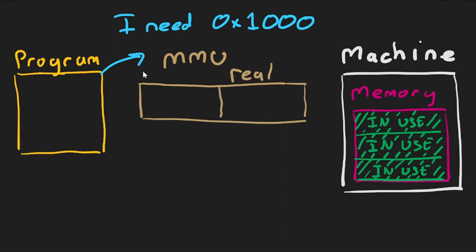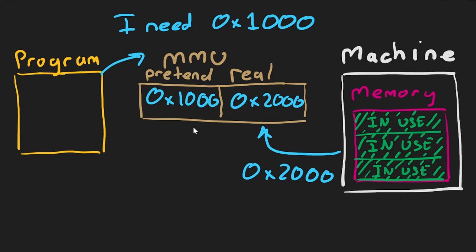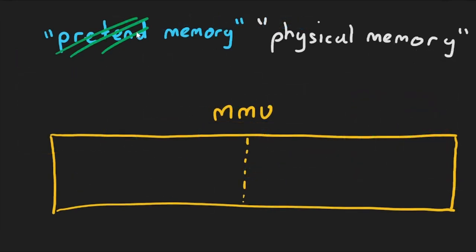The MMU records the physical address that was given on the right and then gives out a pretend address on the left that is used by the program running. This pretend memory on the left hand side is called virtual memory because it physically doesn't exist.